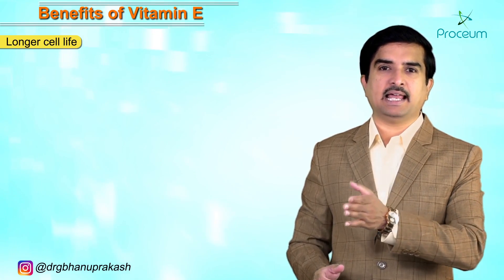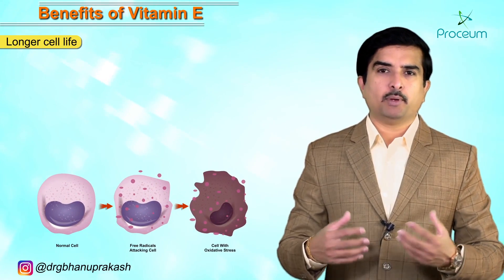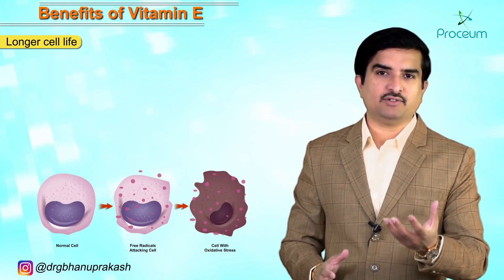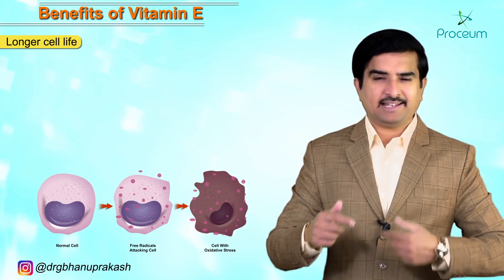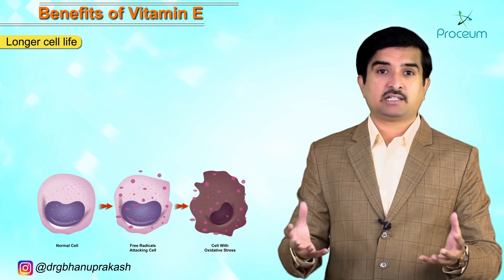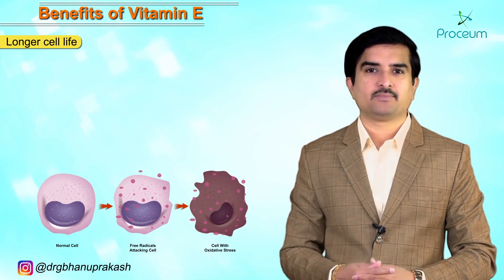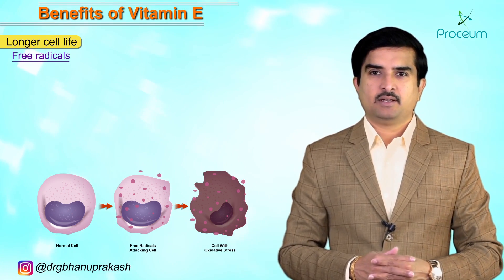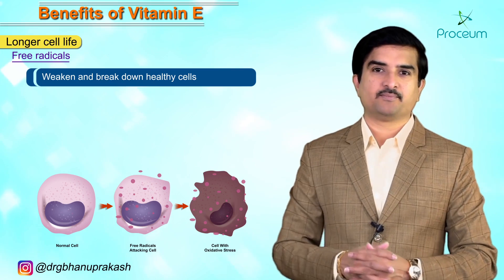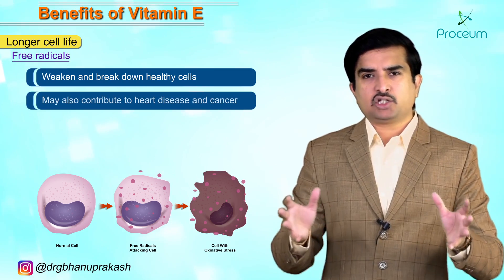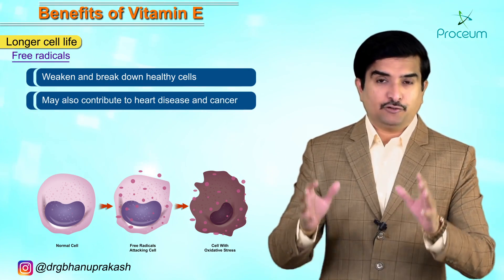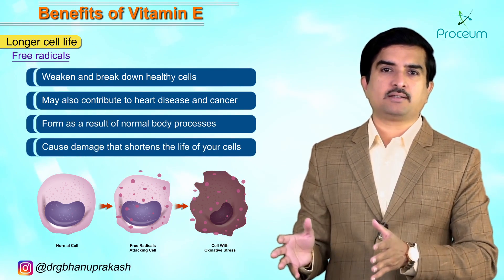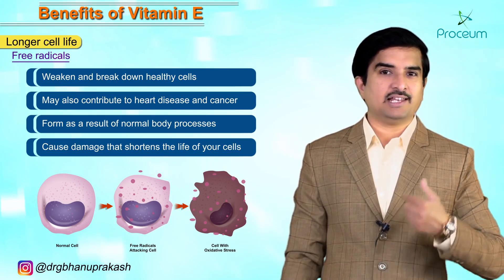Vitamin E is responsible for longer cell life. You've probably seen rust on your bike or car — this rust is mainly caused by oxidative damage to the metal. A similar process of oxidation and accelerated aging takes place in our body when cells are exposed to molecules called free radicals. These free radicals are continuously produced as part of normal metabolic processes, but they weaken and break down healthy cells, contributing to heart disease and cancer, and shortening the lifespan of cells.